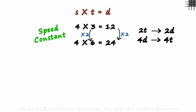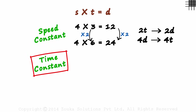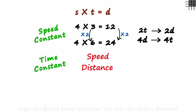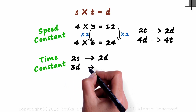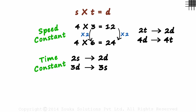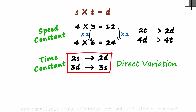What about the case when the time is constant? When time is constant, we can say that speed and distance are directly proportional. When time taken is constant and speed is multiplied by 2, the distance will also be scaled up by 2. And if the distance is multiplied by 3, the speed will also be scaled up by a factor of 3. This is direct variation again.